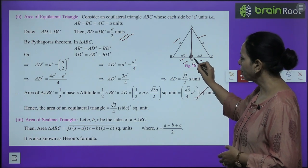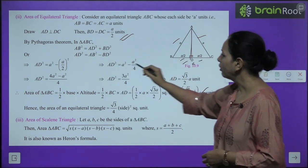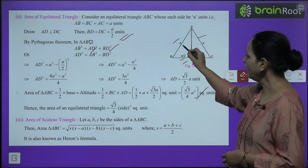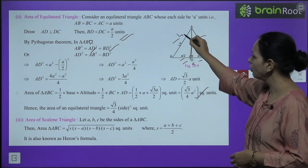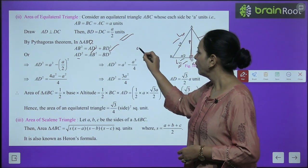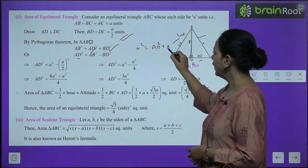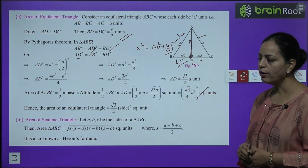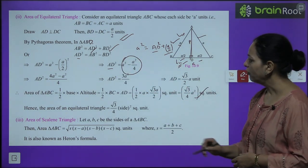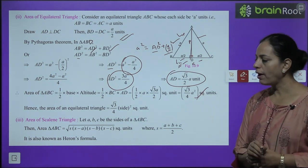From a² = AD² + a²/4, we get AD² = a² − a²/4 = 3a²/4, so AD = (√3/2)a. Now area of triangle = ½ × base × height = ½ × a × (√3/2)a = (√3/4)a². So for an equilateral triangle with side a, area = (√3/4)a².